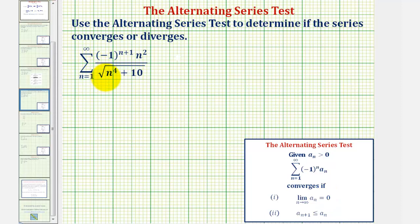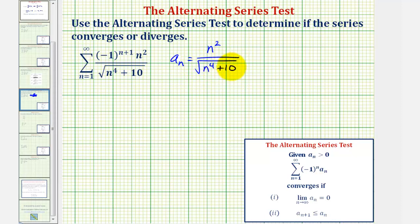Looking at the infinite series, notice that a sub n, the non-alternating part, would be n squared divided by the square root of n to the fourth plus ten. Notice how a sub n is greater than zero for all values of n, and now we'll determine the limit as n approaches infinity of a sub n.